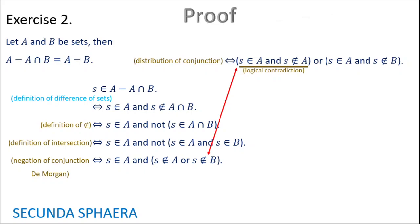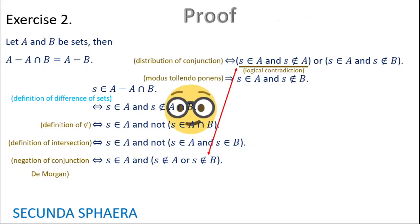It is important to notice that the first term of the disjunction is a logical contradiction — it says s is in A and s is not in A, which is always false, so this is impossible. Fortunately we have a disjunction, so we only need either of the terms to be true. But one is necessarily false, so the other one needs to be true. This is called modus ponendo tollens.